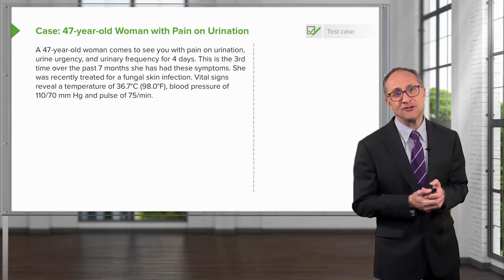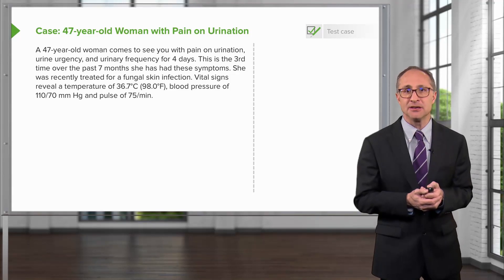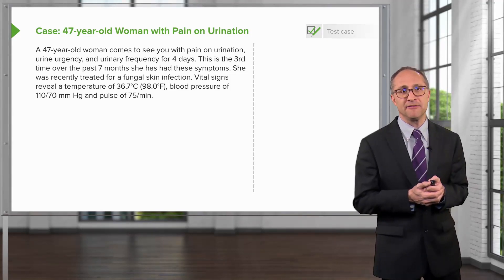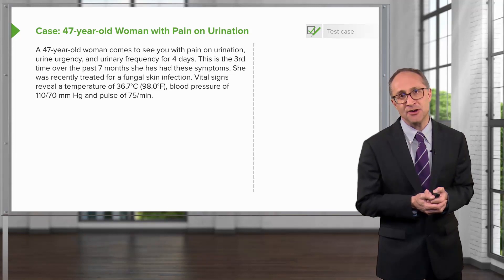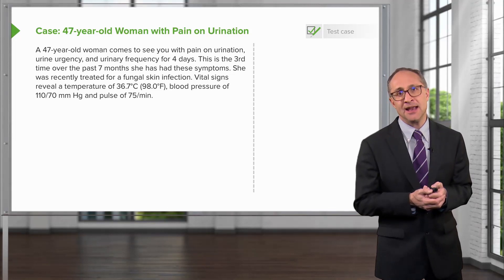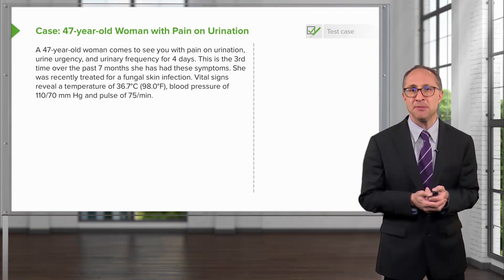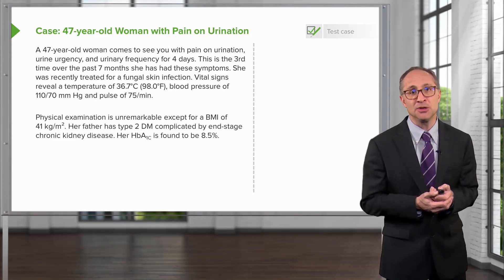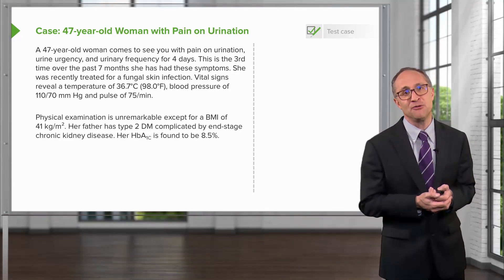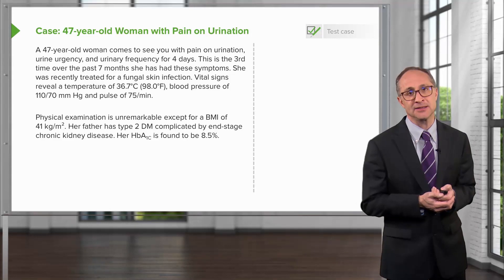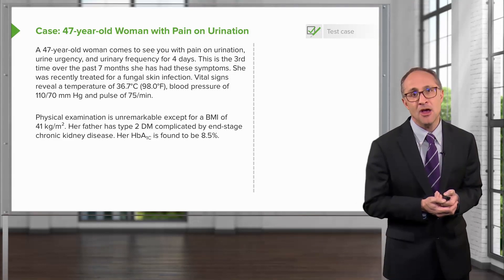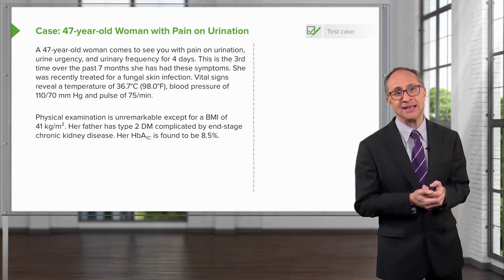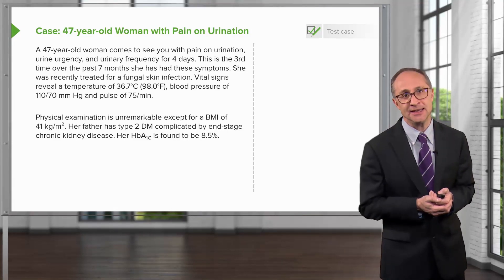She was recently treated for a fungal skin infection. Vital signs reveal a temperature of 36.7, a blood pressure of 110 over 70, and a pulse rate of 75 beats per minute. Physical examination is unremarkable, except that her BMI is 41 kg per meter squared. Her father has type 2 diabetes mellitus, which is complicated by end-stage chronic kidney disease.